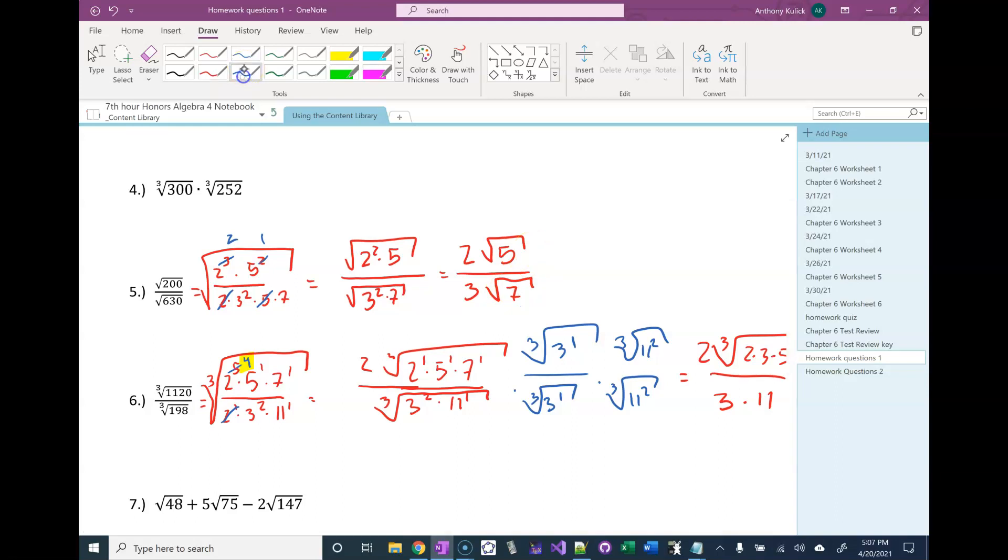And then the last thing I have to worry about is that I have this radical in my denominator. Since I've done all the reducing I can do, the last thing I need to do is just make sure that my answer is properly formatted. To get rid of that square root of 7 in the denominator, I need to turn it into the square root of 7 squared.